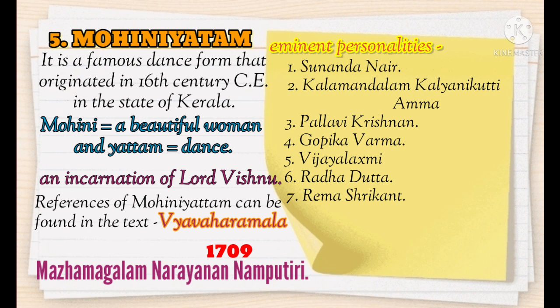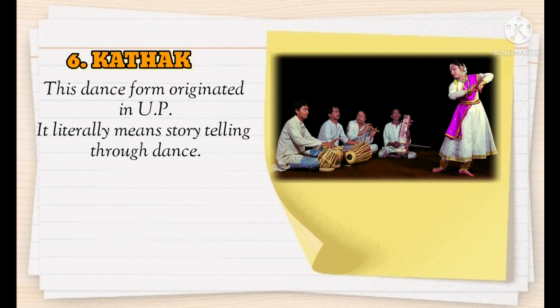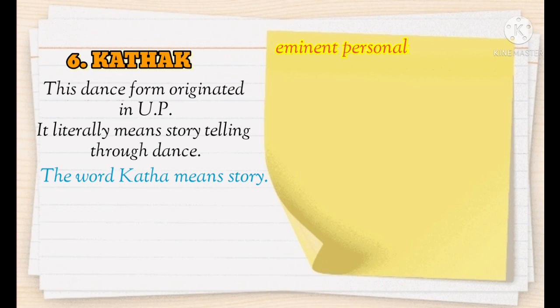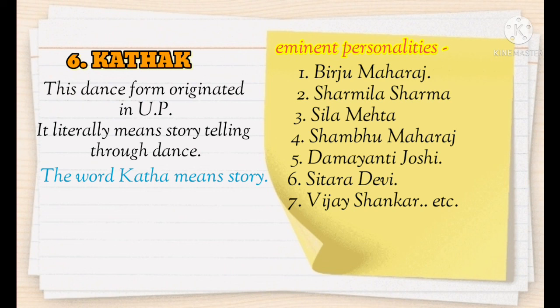Vyavahara Mala was written by Majham Magalam Narayan Naamputri. Eminent personalities in Mohiniattam include: Sunanda Nayyar, Kalamandalam Kalyani Kutty Amma, Pallavi Krishnan, Gopika Verma, Vijayalakshmi, Radha Dutta, Rema Shrikant. Next is Kathak — this dance form originated in Uttar Pradesh and literally means storytelling through dance. Eminent personalities in Kathak are: Birju Maharaj, Sharmila Sharma, Shila Mehta, Sambhu Maharaj, Damayanti Joshi, Sitara Devi, and Vijay Shankar.